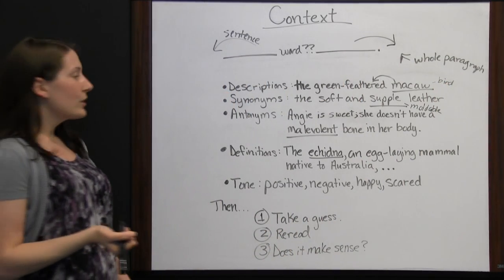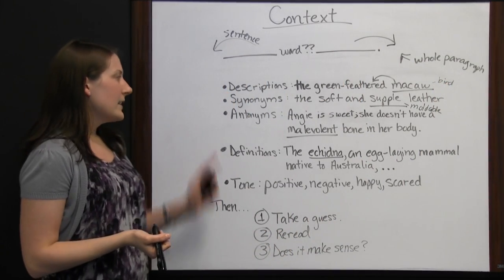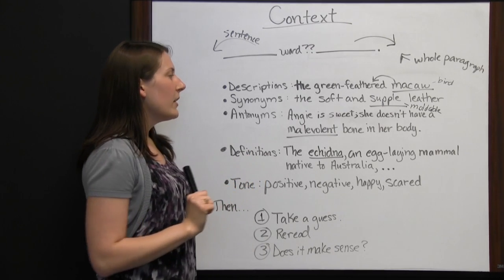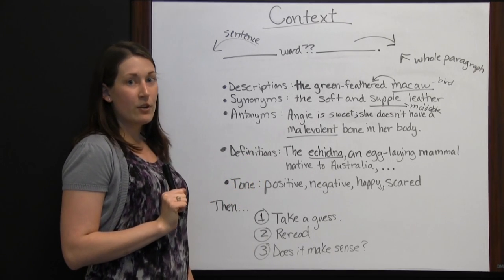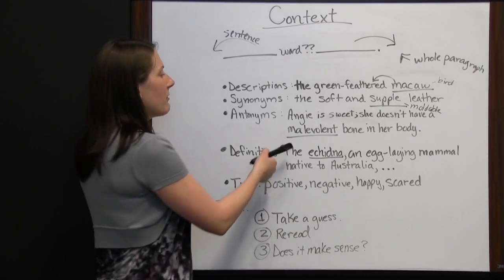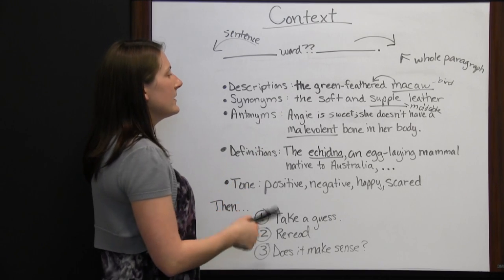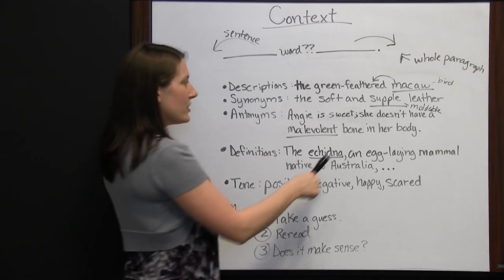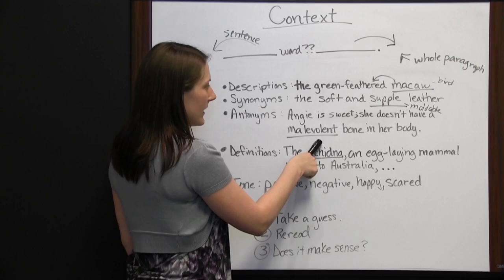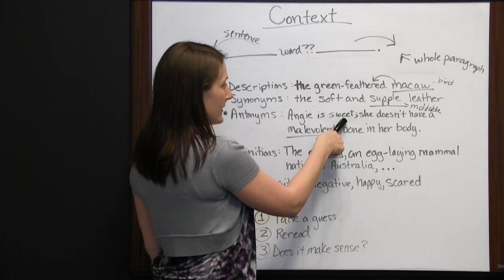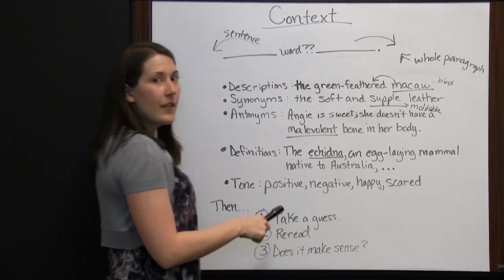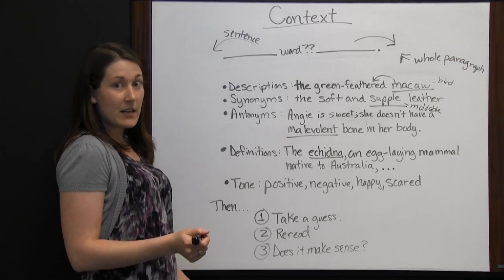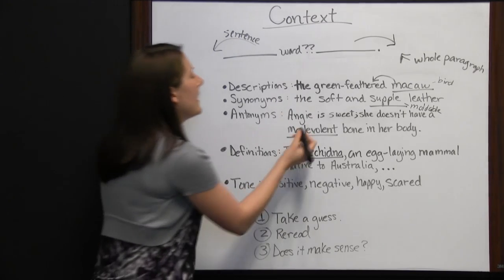Another clue you can look at are synonyms. If you hear 'the soft and supple leather,' well, since you have 'soft' and then 'supple,' both describing leather, you can figure out that supple probably has something to do with being soft. In reality, it means moldable — it's easily moldable, and it is somewhat soft.